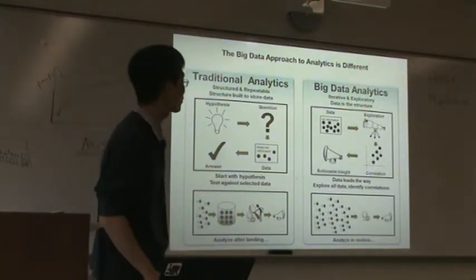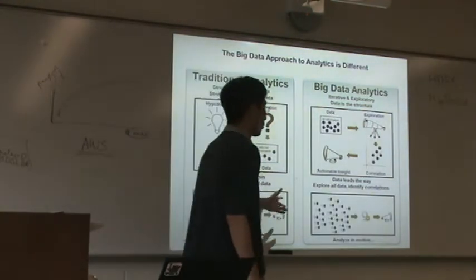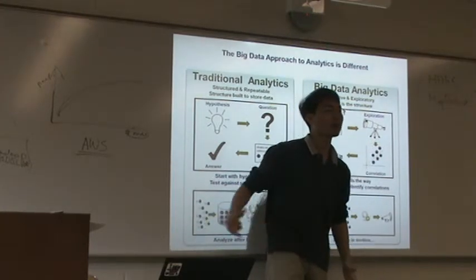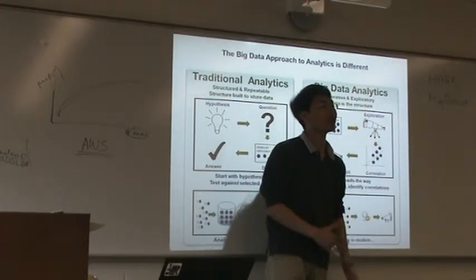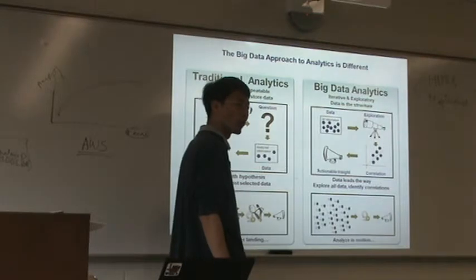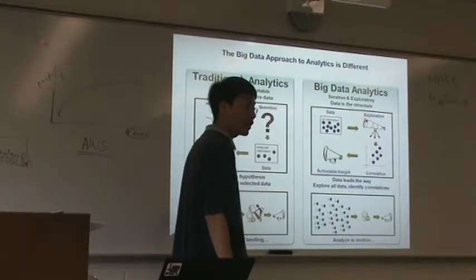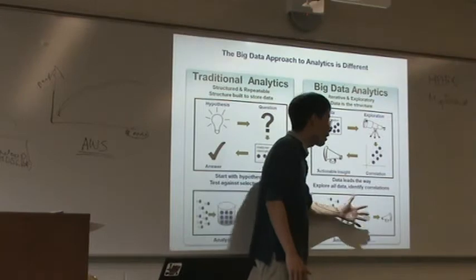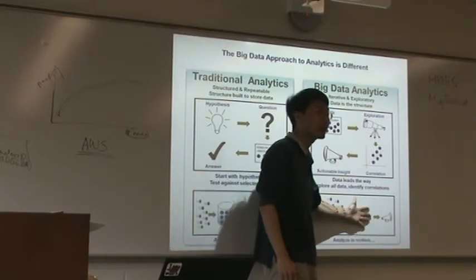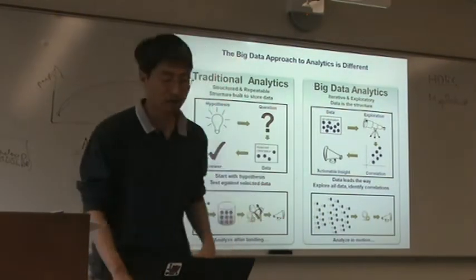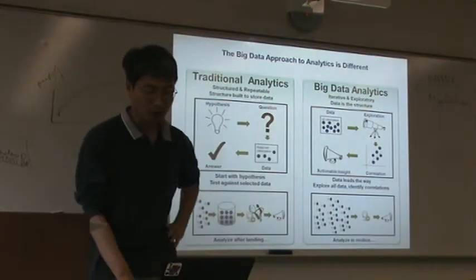In traditional analytics, we need to clean unrelated data and only keep data relevant to the query. Sometimes unrelated data is discarded. But in big data analysis, we consider all the data to process. Also, traditional analytics cannot handle new incoming streaming data, but in big data systems, we can handle such streaming or ongoing data.